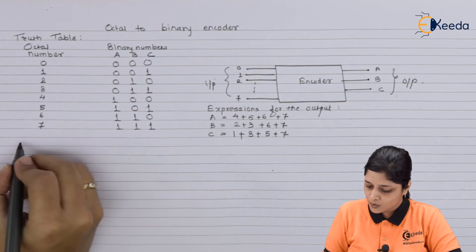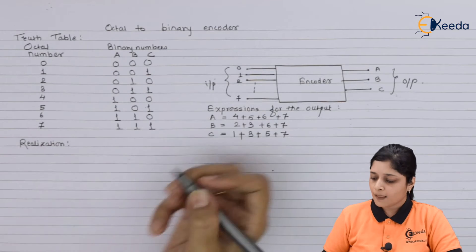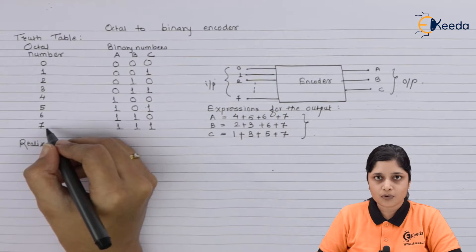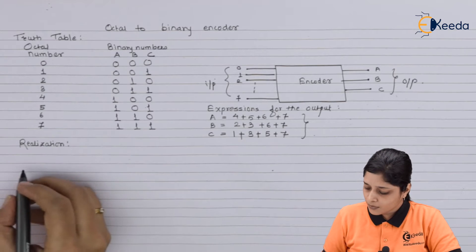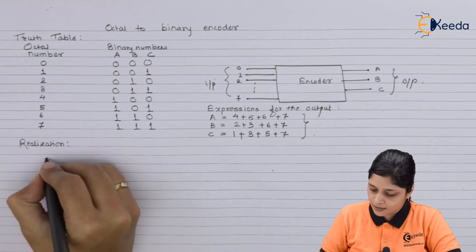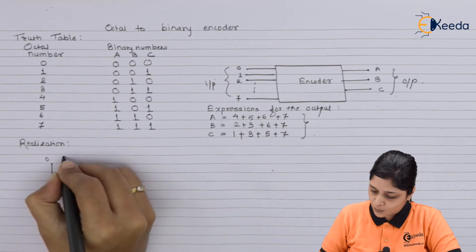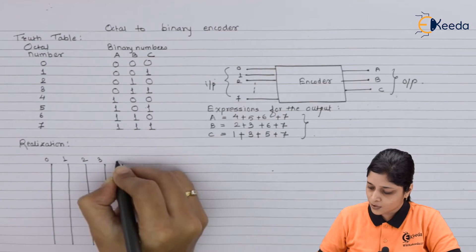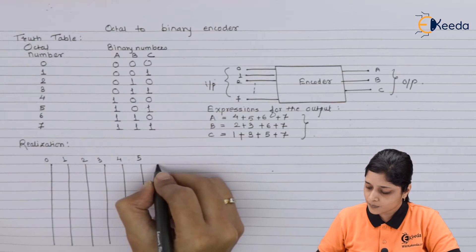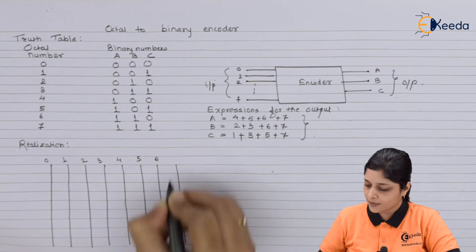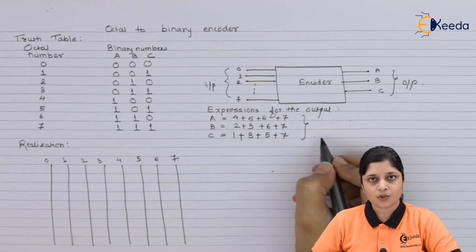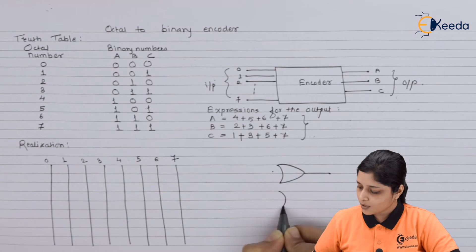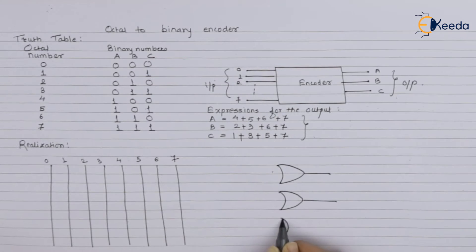After that is the realization part. You should concentrate on the expressions and the octal number inputs. There are 8 inputs and 3 respective outputs. We will draw 8 input lines: 0, 1, 2, 3, 4, 5, 6, and 7 on the input side. These expressions are executed with the help of OR gates. We will draw an OR gate for A, then another OR gate for B, and a third OR gate for C.